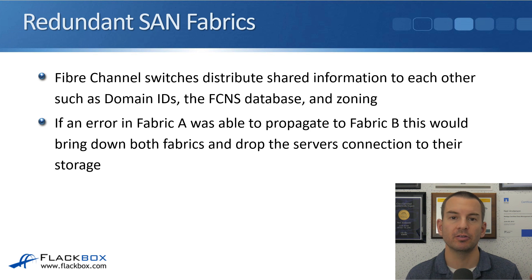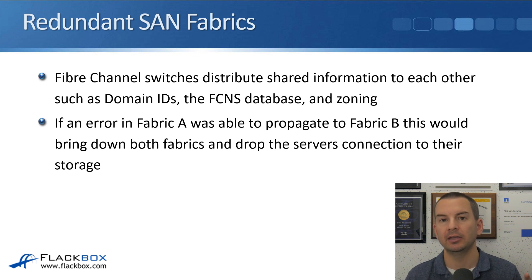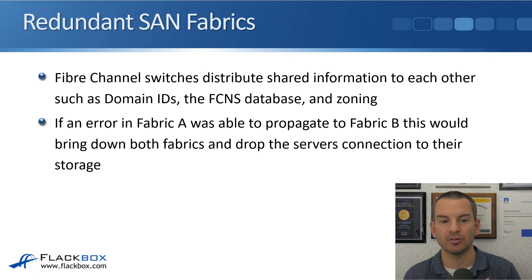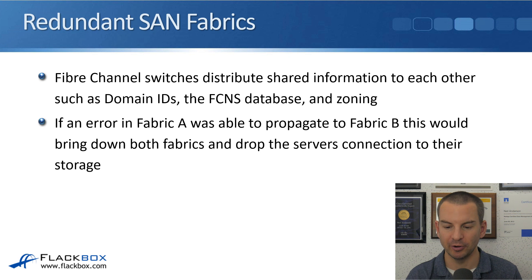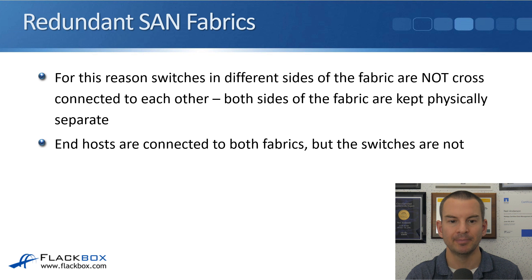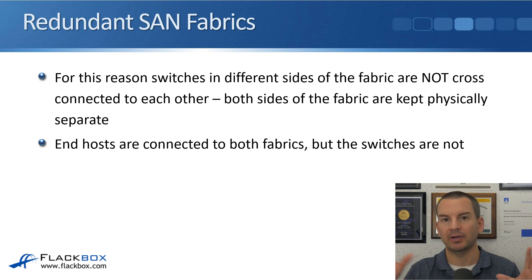Fibre Channel switches distribute shared information to each other, such as the domain IDs, the FCNS database, and zoning, as you learned in the earlier lectures. If an error in Fabric A was able to propagate to Fabric B, or vice versa, this would bring down both fabrics and drop the servers' connection to their storage. So for this reason, switches in the different sides of the fabric are not cross-connected to each other — both Fabric A and Fabric B are kept physically separate.